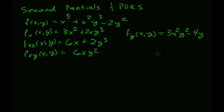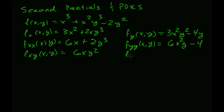Now let's do the second partial of y with respect to y, which is going to give me 6x squared y minus 4. And if I do the second partial of y with respect to x, that one is going to give me 6xy squared, and then that falls off.